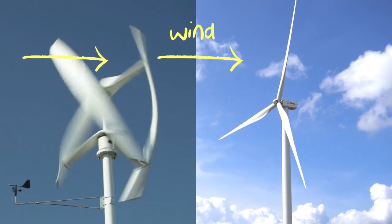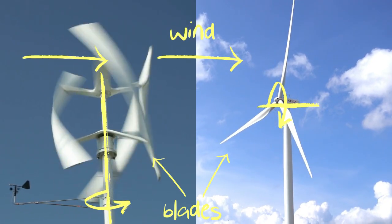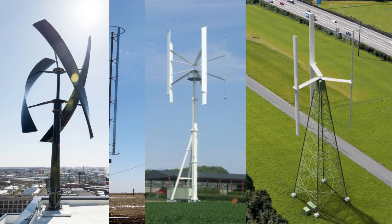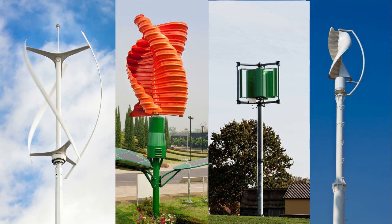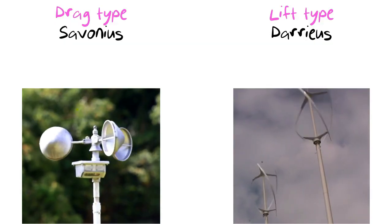The basic idea of a vertical axis turbine is the same as a horizontal axis one — the wind exerts a force on the blades which turns a shaft connected to a generator which generates electricity. There is still a huge range of variety in vertical axis wind turbines, but they can be split into two broad categories: the drag type and the lift type, also known as Savonius and Darrieus type.